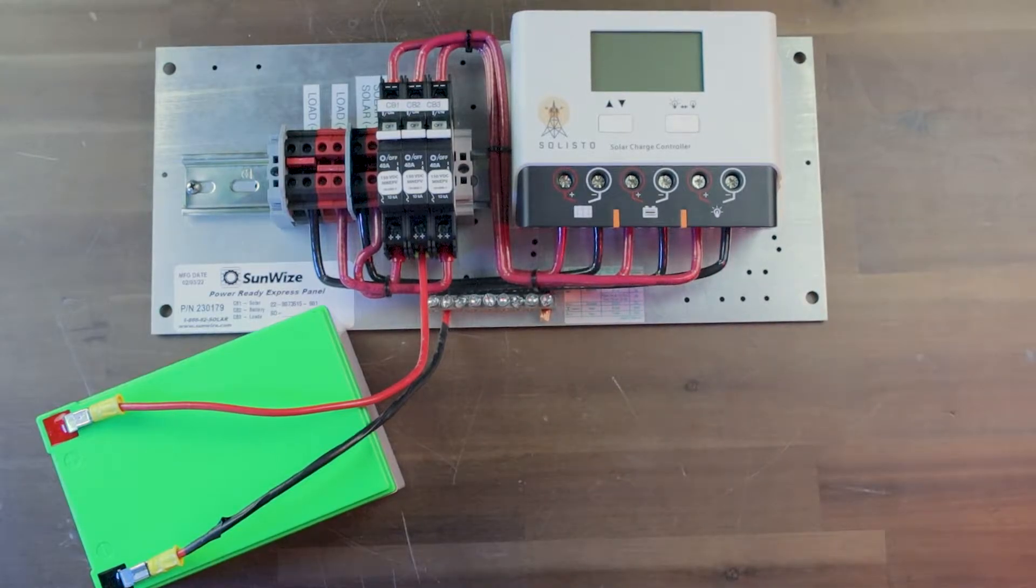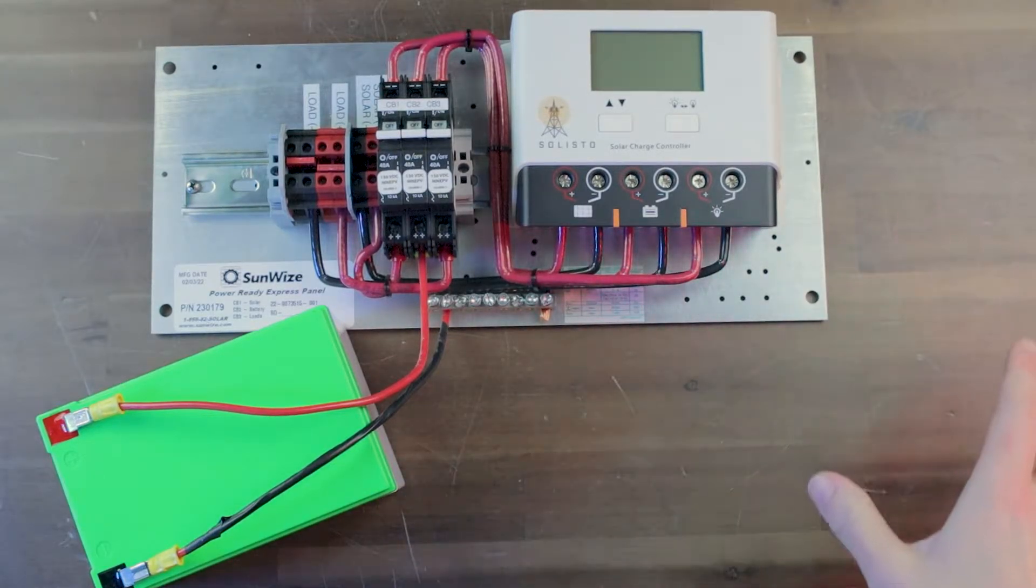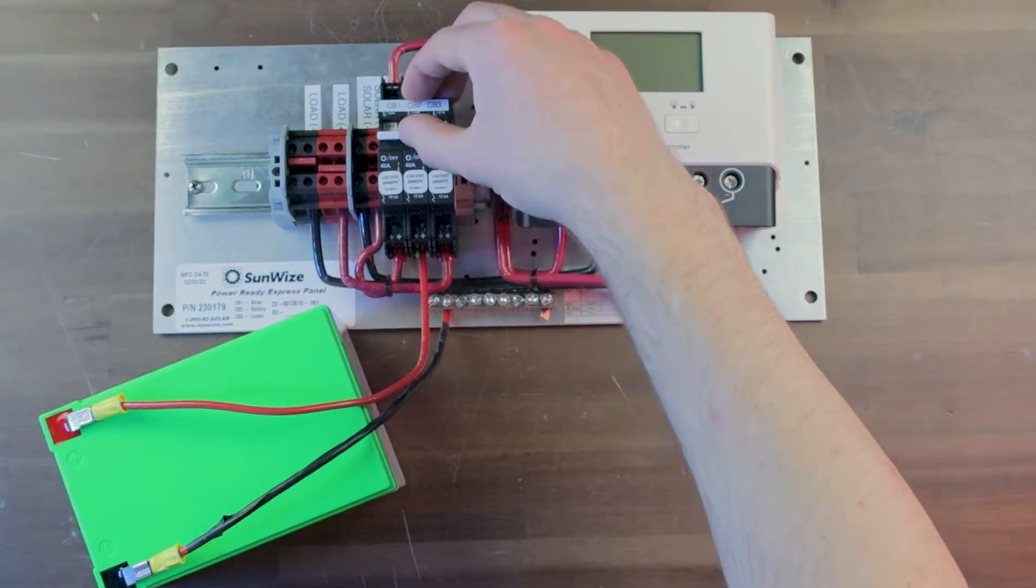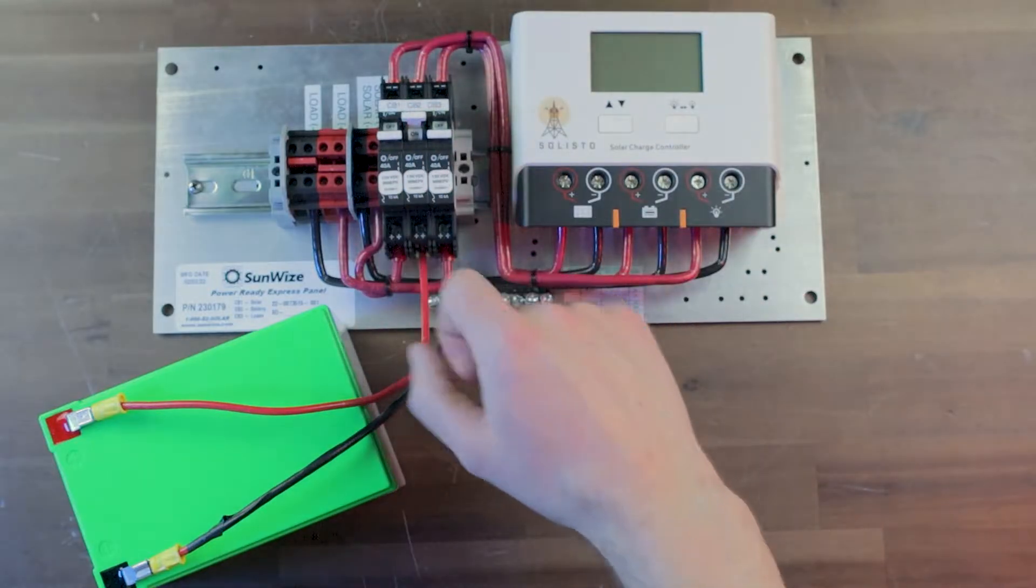Just here to test, just for demonstration, but I'll walk you through that process now. The first step is going to be powering on the charge controller and making sure the solar and load breakers are off just to isolate the charge controller.